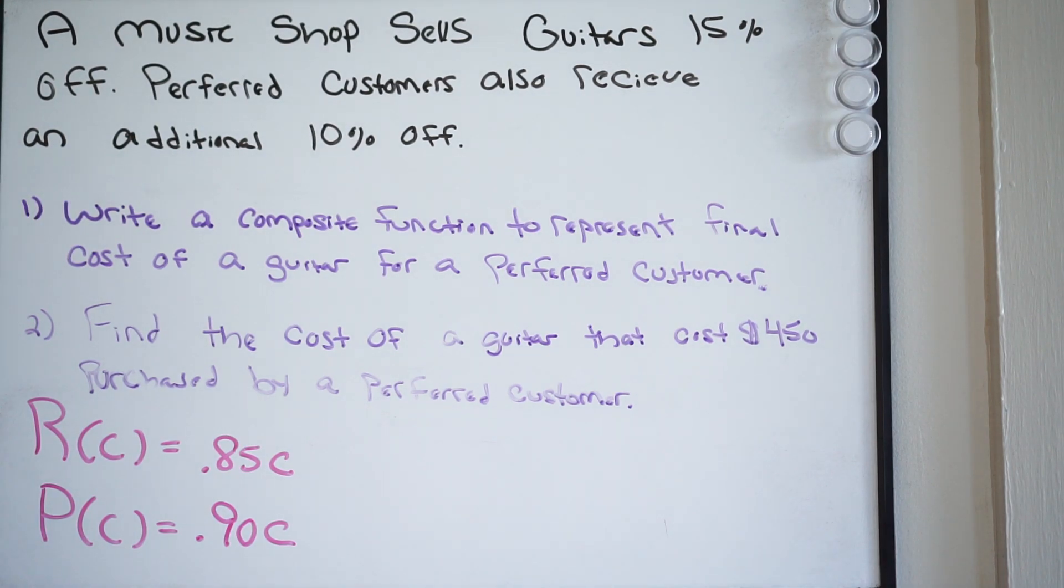So we're going to do a composite function. Remember what we're trying to get here. We're trying to get the final cost of the preferred customer. So what we're going to do here is we're going to do P compose R of C.